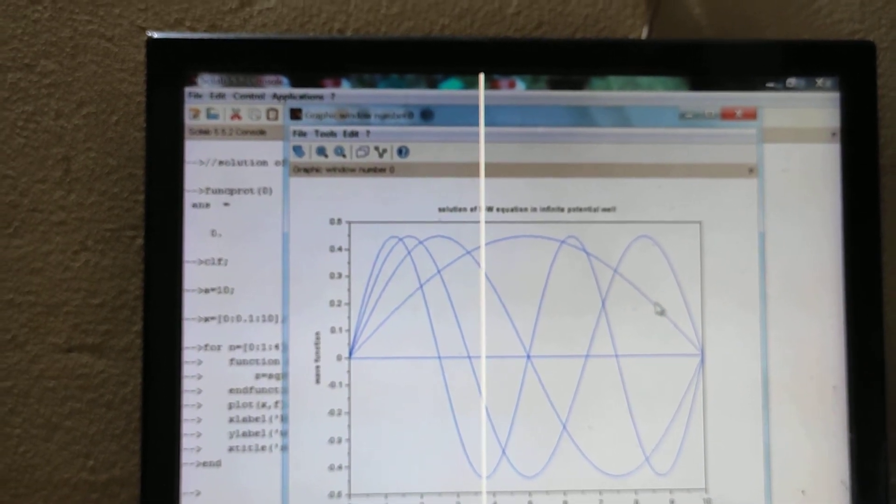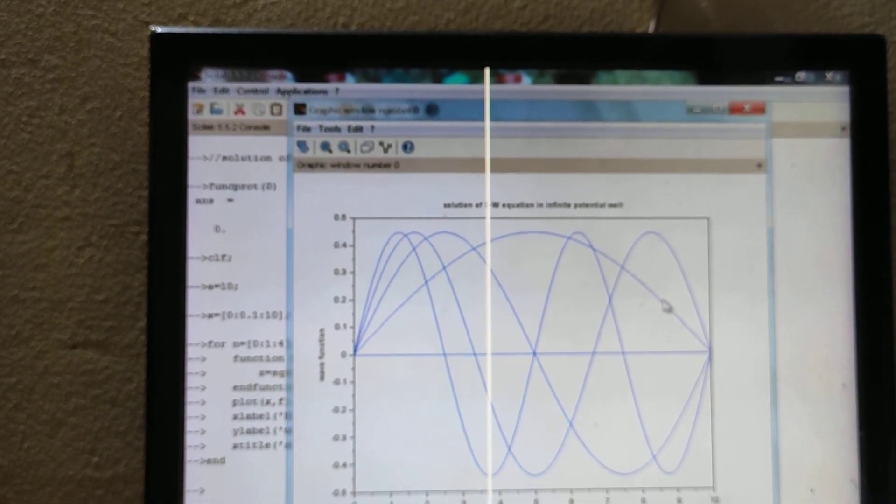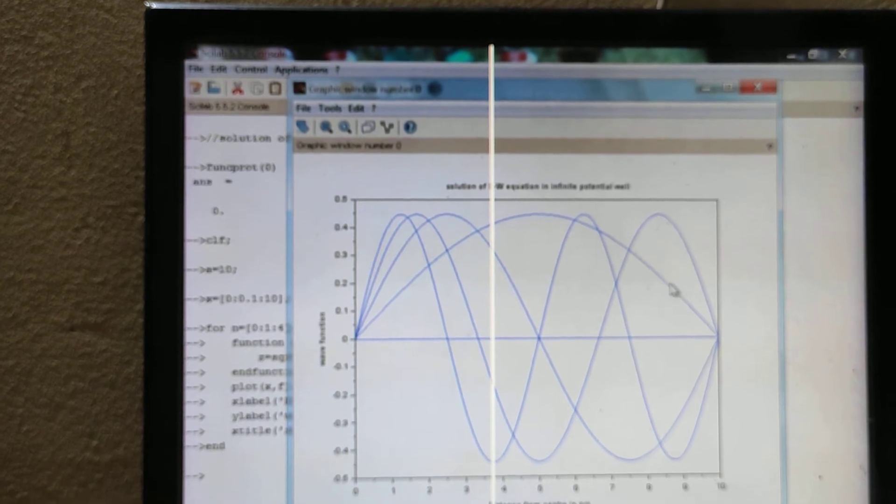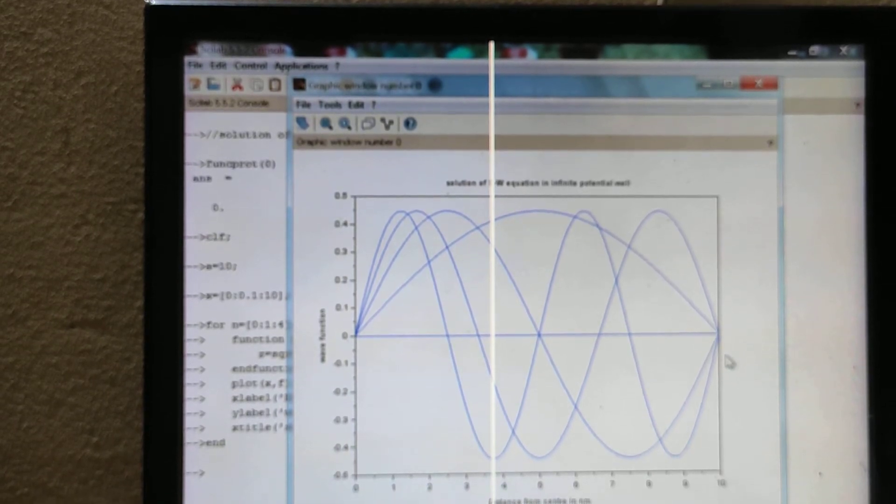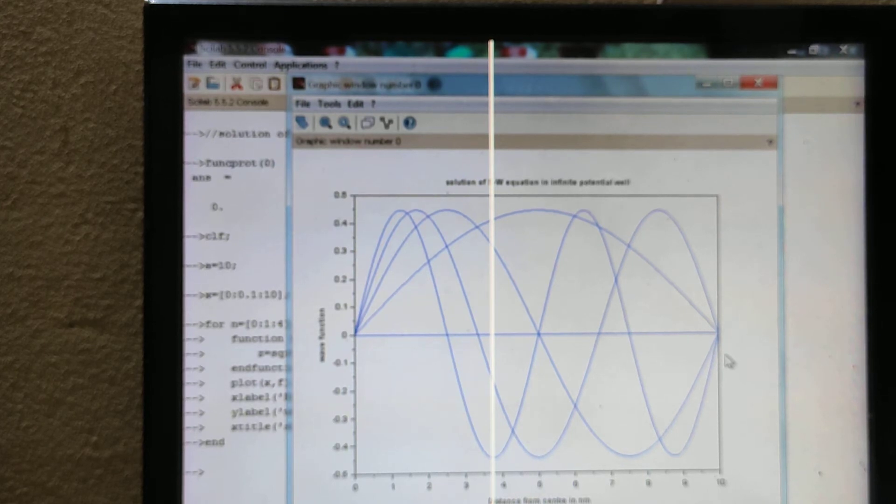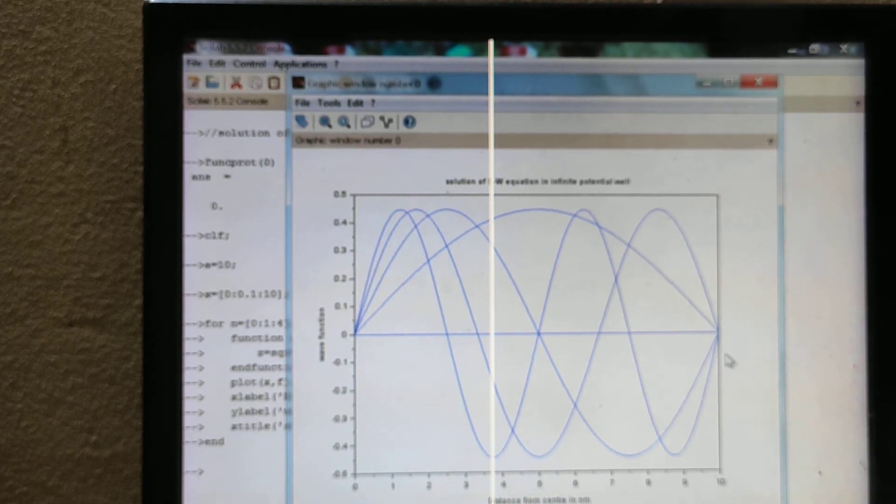This is the graph of Schrodinger wave equation in an infinite potential well. This program I have done without using differential calculus.